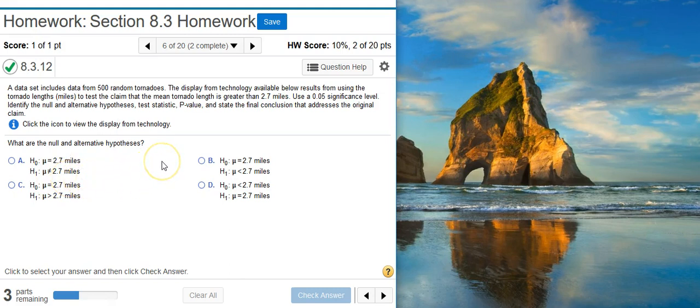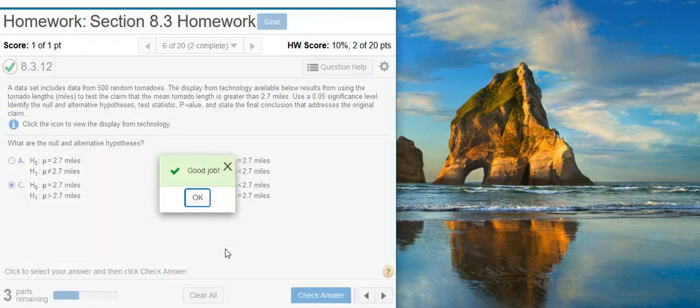And to do that, we look at the claim. What is the claim that we're being asked to evaluate? Well, here in the problem statement, it says we're testing the claim that the mean tornado length is greater than 2.7 miles. So we want that mean to be greater than 2.7, and that's this answer option here. I check my answer. Good job!